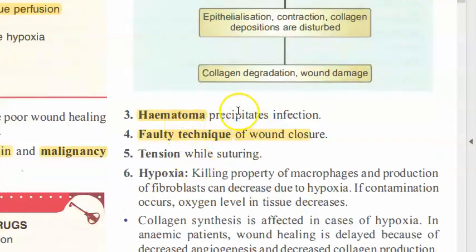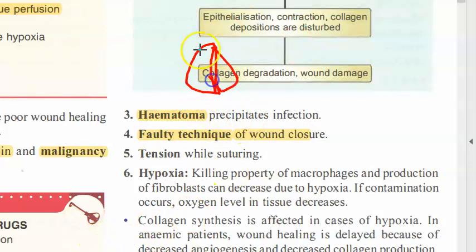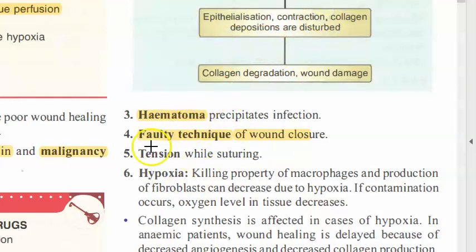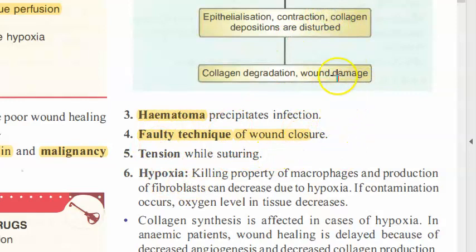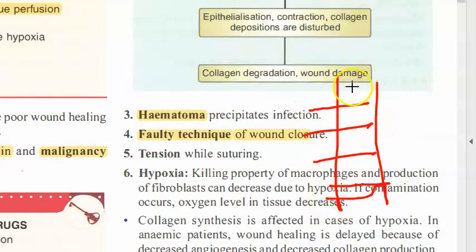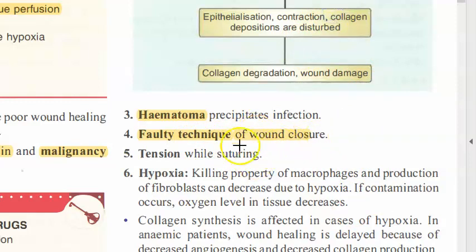Hematoma precipitates infection — for example, a septal hematoma in the nose can get infected and lead to septal perforation, as seen in ENT. Faulty wound closure technique is another local factor — for healing by primary intention, there must be perfect alignment of the wound edges with proper suturing.